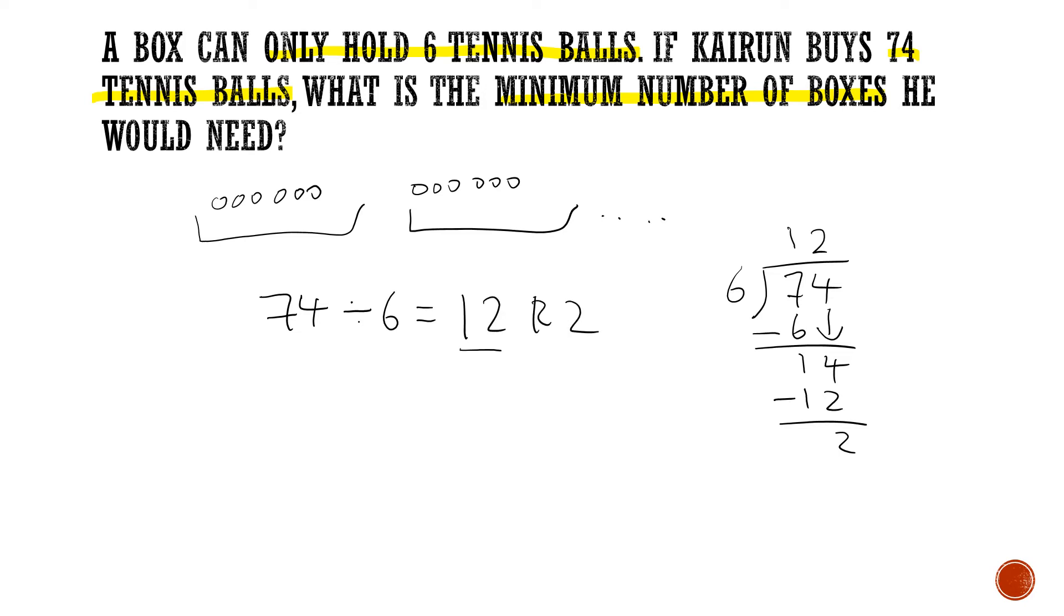Now remember, this 12 over here is talking about 12 complete groups of 6. I repeat, it's 12 complete groups of 6. Means that there are 12 boxes that have a total of 6 balls in each box. But what about this one over here? This one needs to fit into another box, correct? Because you can't just have 2 tennis balls lying around. So actually we need 12 boxes plus an extra box and we get 13 boxes in total.